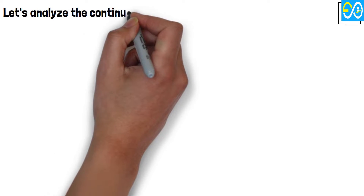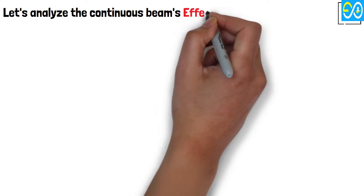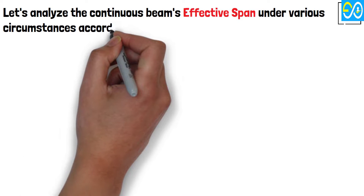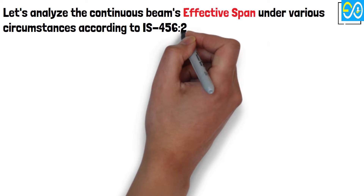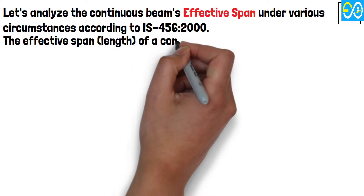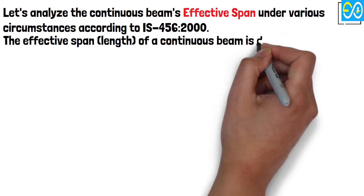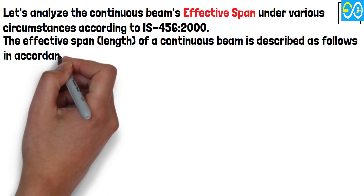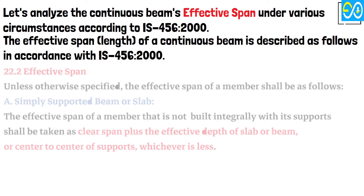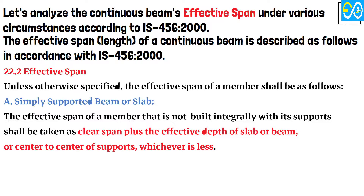Let's analyze the continuous beam's effective span under various circumstances according to IS 456-2000. The effective span of a continuous beam is described as follows in accordance with IS 456-2000, clause 22.2 — Effective Span. Unless otherwise specified, the effective span of a member shall be as follows.